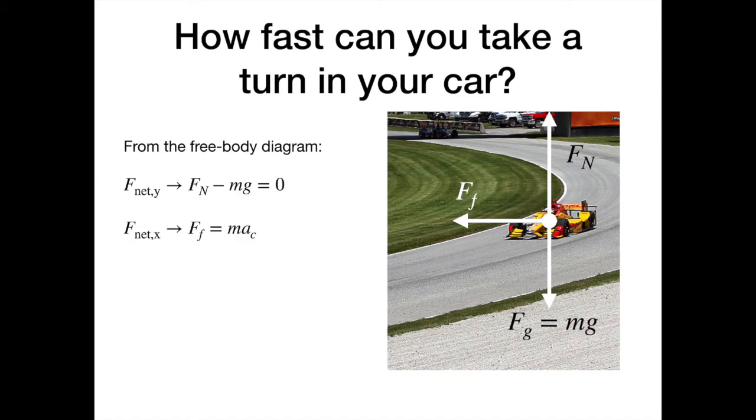In the horizontal direction, we have the force of friction. And that is going to be identified as the centripetal force. So the force of friction then is going to be equal to the mass of the car times the centripetal acceleration. We know the centripetal acceleration is given by the expression v squared over r, where v is the speed of the car and r is the radius of the turn. So we can put that information into that equation. So we have the force of friction is equal to mass of the car times its velocity squared divided by the radius of the turn.